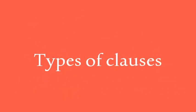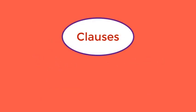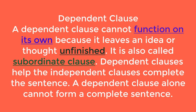Types of clauses. There are two types: dependent clause and independent clause. A dependent clause cannot function on its own because it leaves an idea or thought unfinished. It is also called a subordinate clause. Dependent clauses help the independent clause complete the sentence.